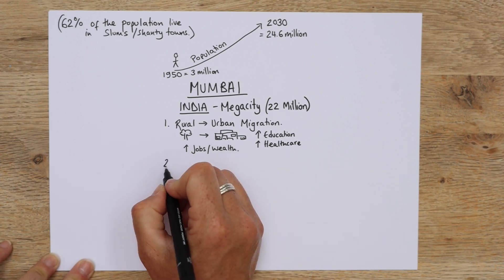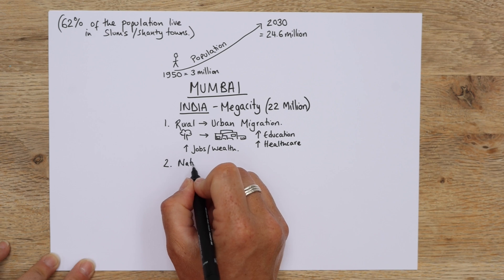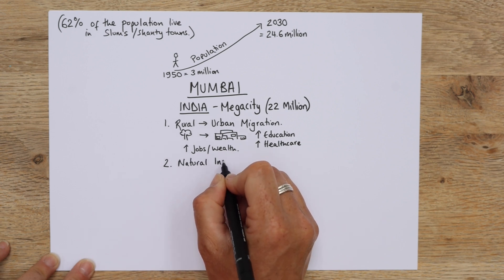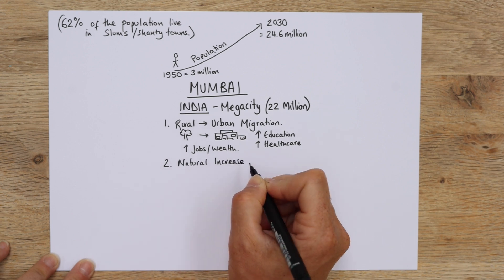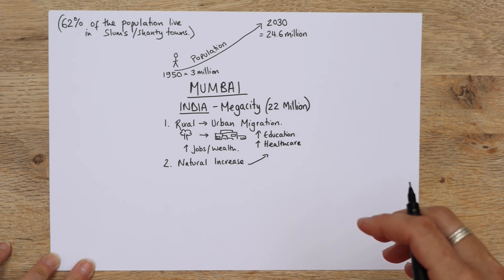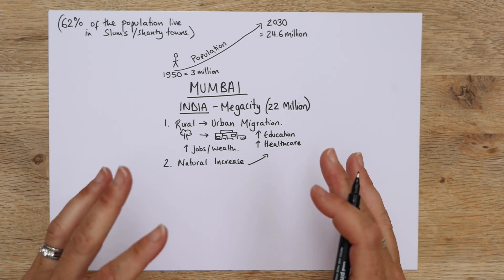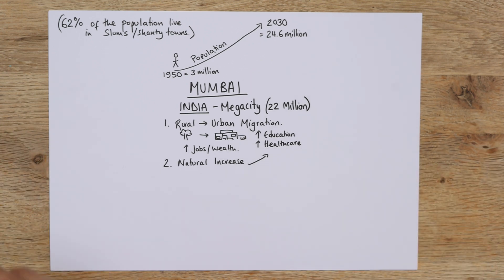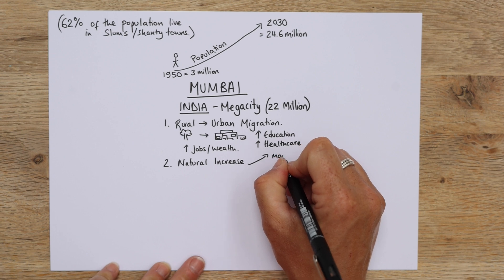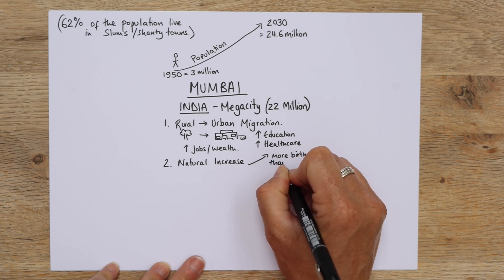The second reason is called natural increase. Natural increase is very simple — it's just more babies being born than there are people dying. So once all these people have come into an area and they're reproducing and having families, that's just going to push up the population. So: more births than deaths.